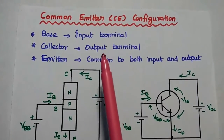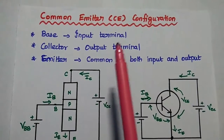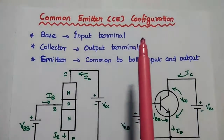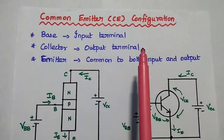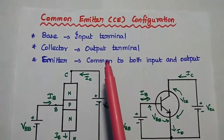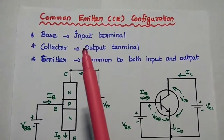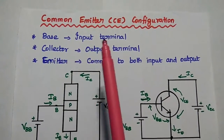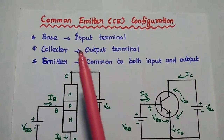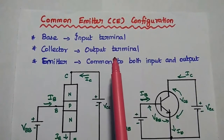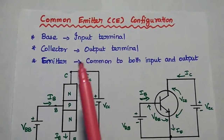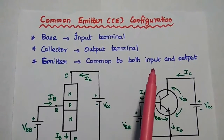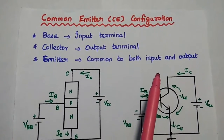Dear students, now we are going to discuss common emitter configuration and its characteristics in detail. In this configuration, base is the input terminal, collector is the output terminal, and emitter is common to both input and output.